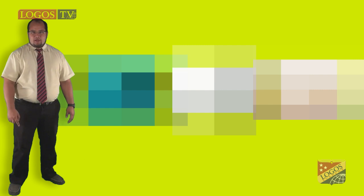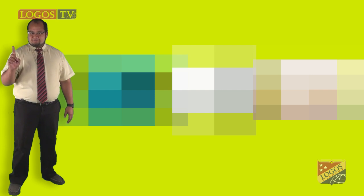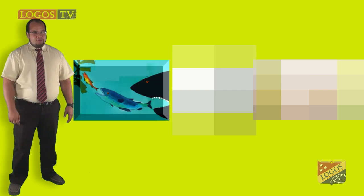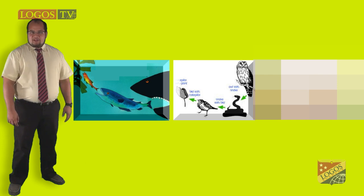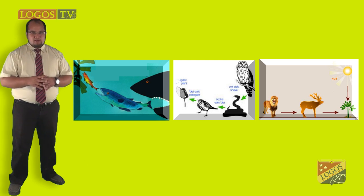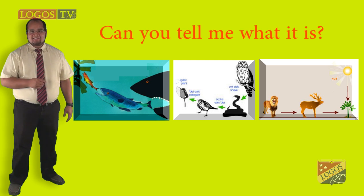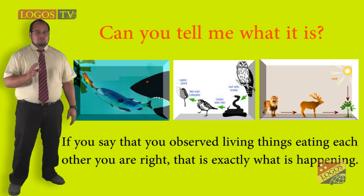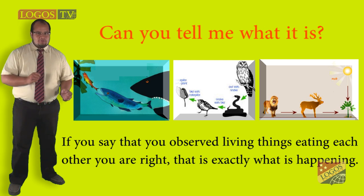You are going to observe some pictures, and I would like you to try to figure out what happens in each one of them. Look at picture number one. Now look at picture number two. Finally, look carefully at picture number three. There is something you see in all of these pictures. Can you tell me what it is?